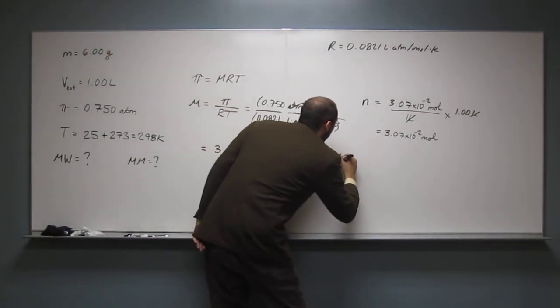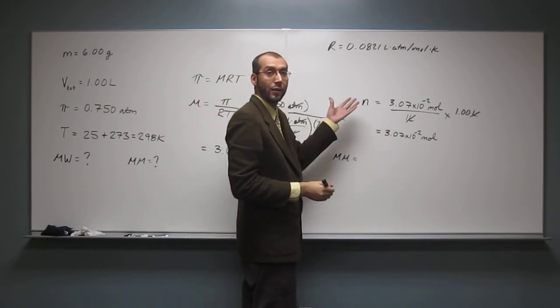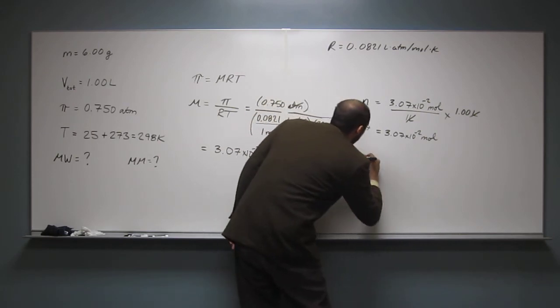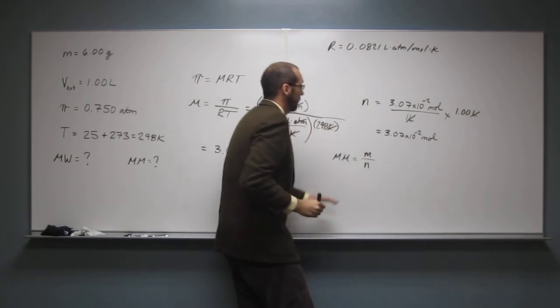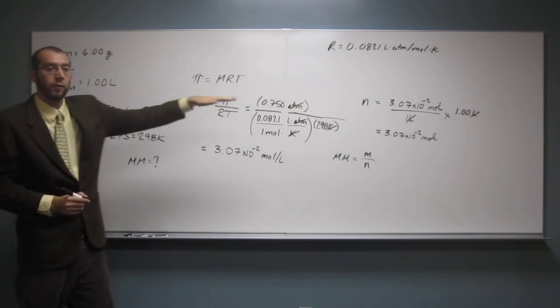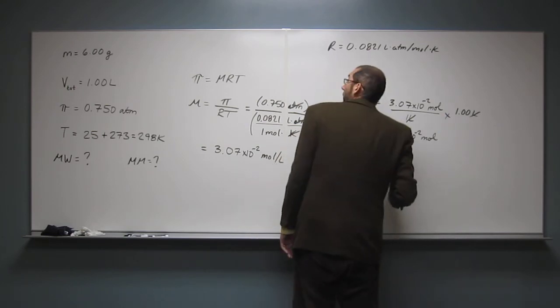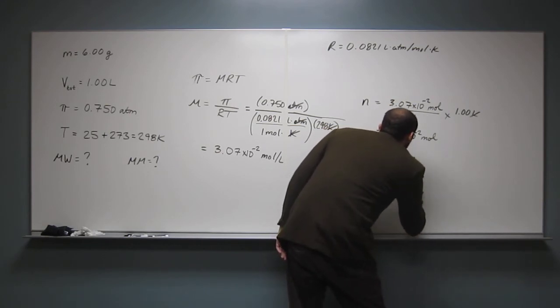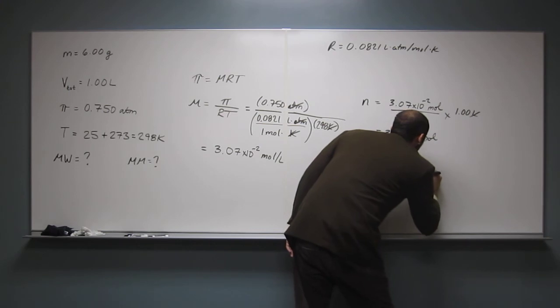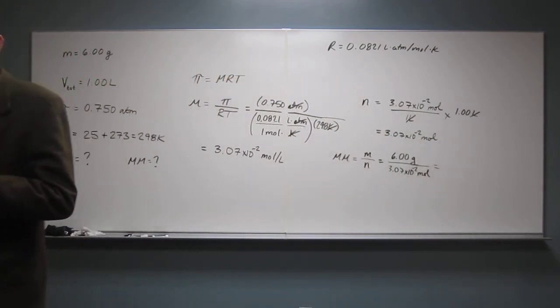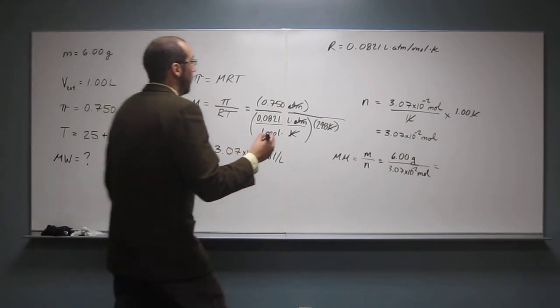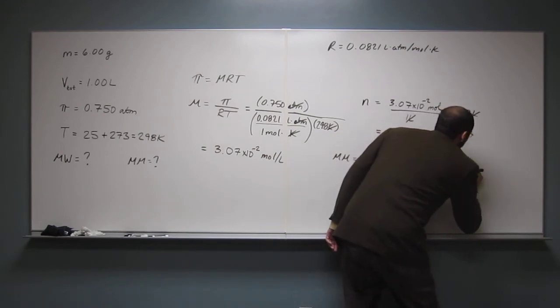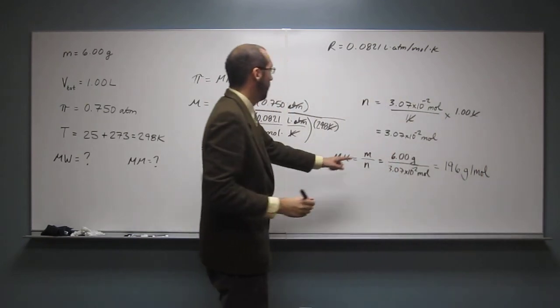Okay, remember the molar mass is the mass per mole, right? Like grams per mole. Okay, so the mass divided by the number of moles. So we have the mass and we have the number of moles. So let's figure out what the molar mass is. So 6.00 grams divided by 3.07 times 10 to the negative 2 moles. And that's going to give us units in grams per mole. So to 3 sig figs I get 196 grams per mole. Okay, but that's the molar mass.